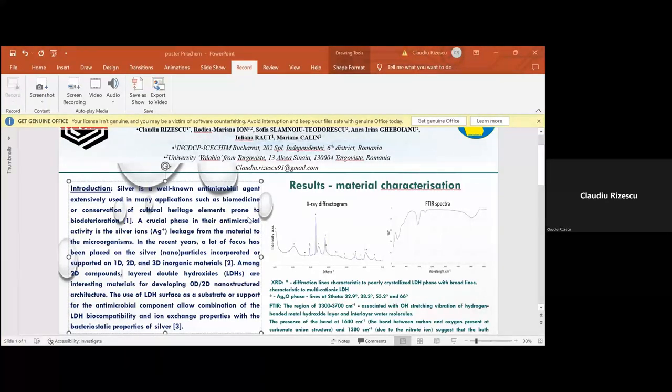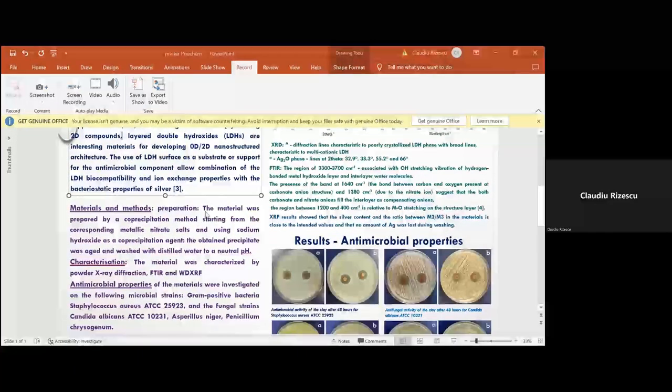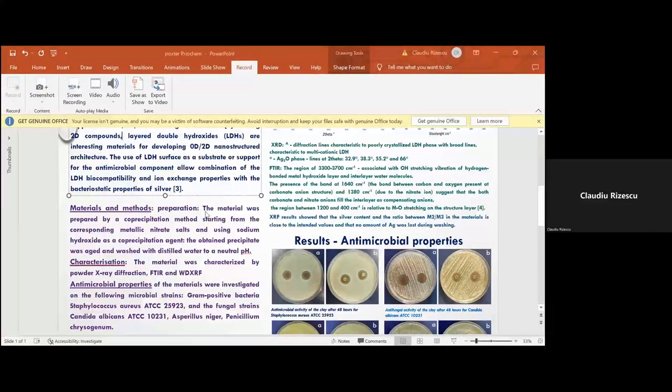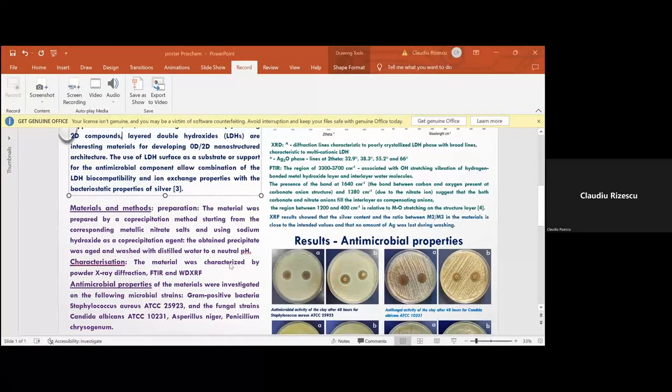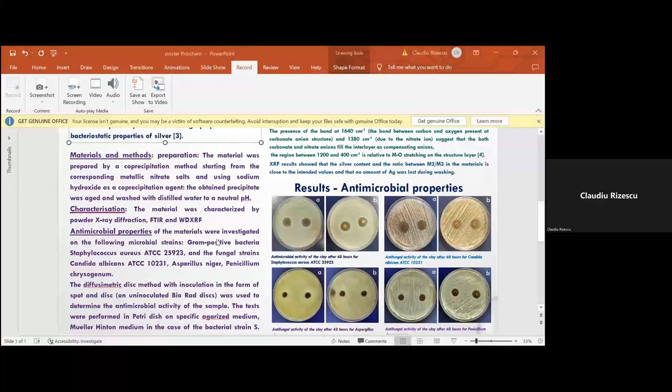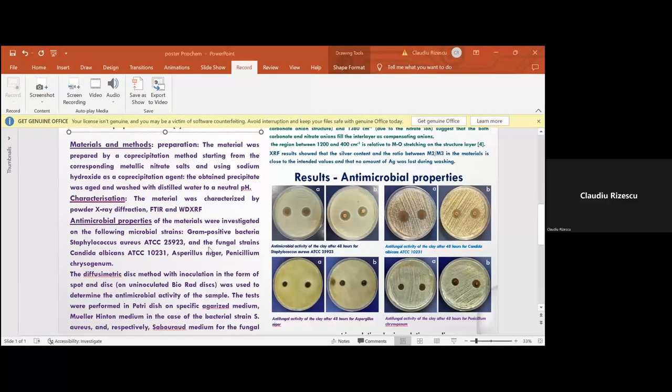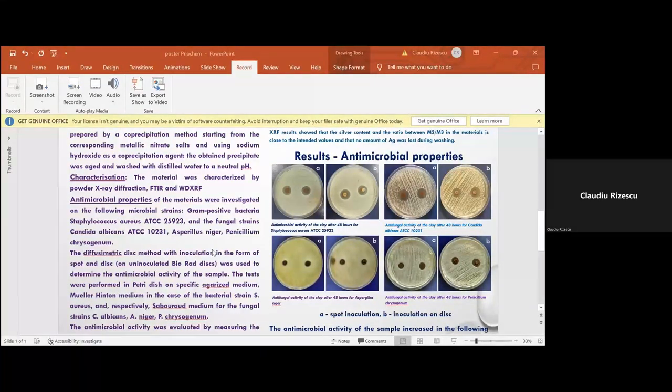Claudio Rizescu, one pot synthesis of silver modified layer double hydroxide with potential antimicrobial properties. In this work, we prepared a silver modified layer double hydroxide with potential application in the field of cultural heritage or biomedicine. Material and methods: The material is prepared by a modified coprecipitation method starting from the corresponding metallic nitrate salts and using sodium hydroxide as coprecipitation agent. The obtained precipitate was aged and washed with distilled water to neutral pH. The material was characterized by powder X-ray diffraction, Fourier transform infrared spectroscopy, and wavelength dispersive X-ray fluorescence. The antimicrobial properties were investigated on the following microbial strains: Gram-positive bacteria Staphylococcus aureus, and fungal strains Candida albicans, Aspergillus niger, and Penicillium chrysogenum.